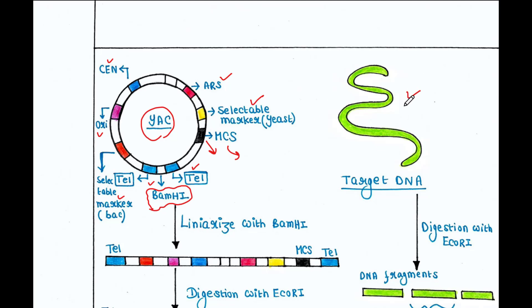This is our target DNA that we want to clone in the YAC. The first thing is that we can maintain the YAC in a bacterial cell, since it is easy to do so there. That's why it has ORI — so it gets replicated in the bacterial cell — and that's also why it has a selectable marker for bacteria. After isolating YAC from the bacterial cell, we linearize it with BAMH1. When BAMH1 cuts, the YAC vector gets linearized with telomere ends at the two terminals.